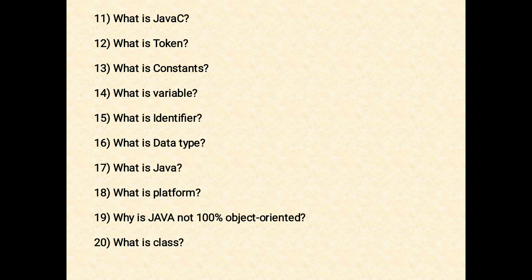The next question: why is Java not 100% object oriented? Java is not 100% object oriented because it utilizes eight types of primitive data types — boolean, byte, char, int, float, double, long, and short — which are not objects.